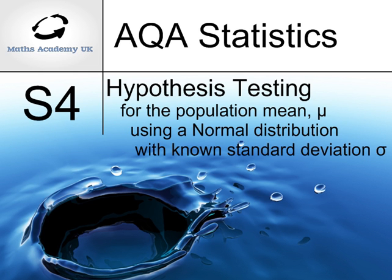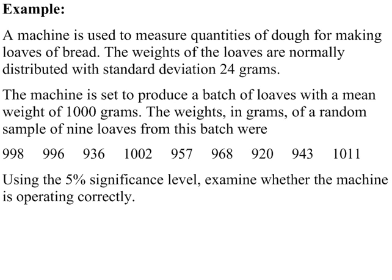Hypothesis testing for the population mean using a normal distribution with known population standard deviation. In this example, the weights of the loaves of bread are normally distributed with standard deviation 24. That's the population standard deviation.